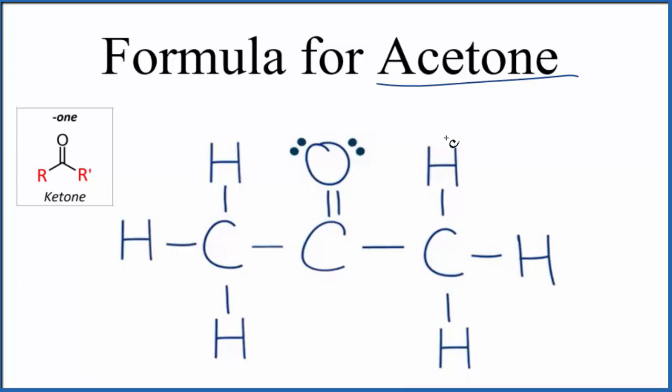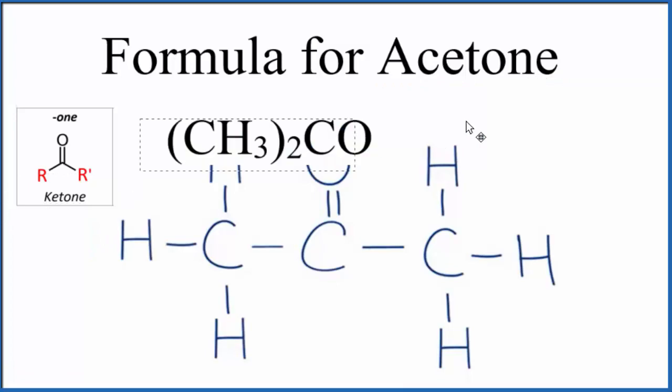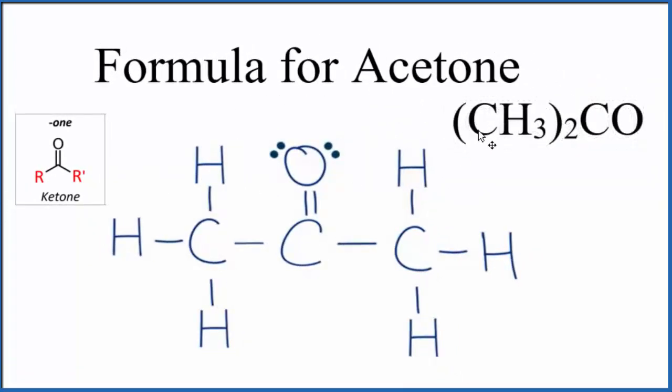Acetone is the simplest of the ketones. If we wanted to write the molecular formula, often we just see it written like this. We have two of these methyl groups, these two CH3, one here and one here, and then we have a carbon double bonded to an oxygen. That's right here. That's what makes it a ketone. So that's one way to write the molecular formula for acetone.